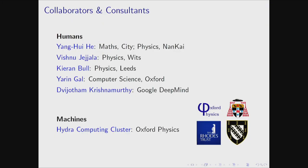These are the collaborators and consultants I work with. Kyron Bull is a student — most of the work done here was done as part of his master's thesis, and he is responsible for implementing all of this. He has recently moved to Leeds from Oxford for his PhD. Vishnu Jajala and Yangui Hai are familiar. Yairn Gayal is a new computer science professor at Oxford interested in applying machine learning to various different fields. DJ Krishnamurti from DeepMind is interested in more formal aspects of machine learning. The work presented here was done using the Hydra computer cluster.